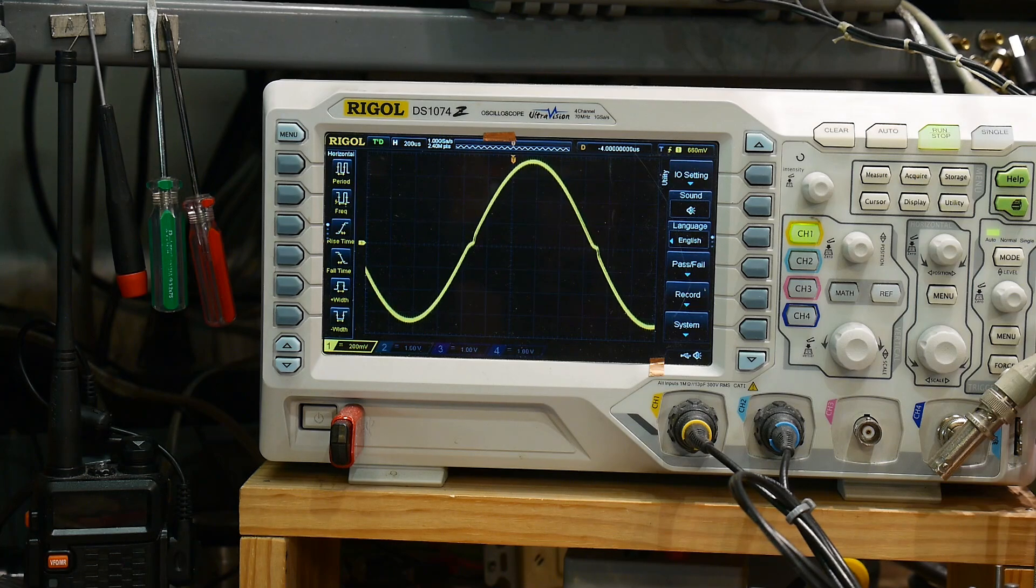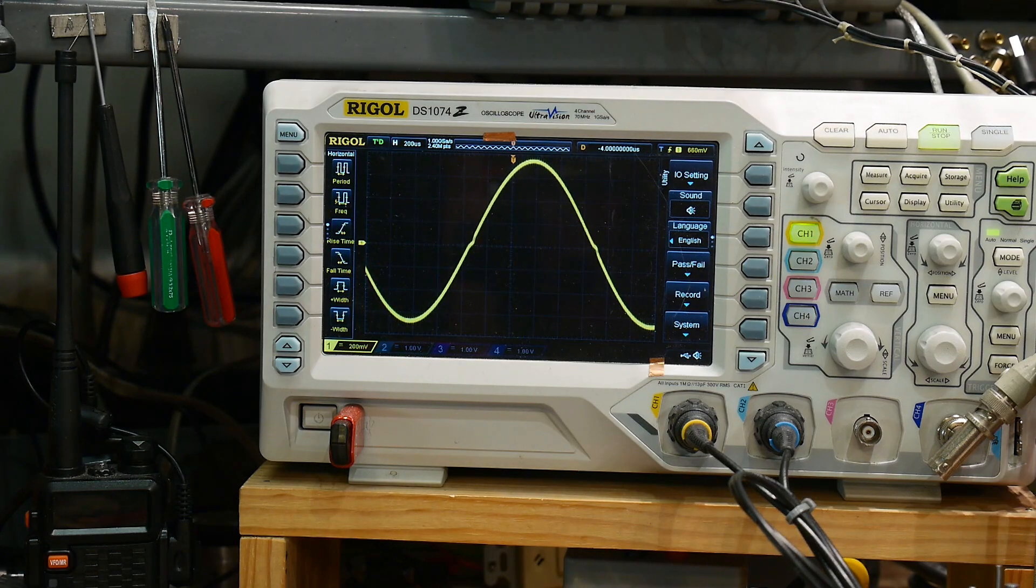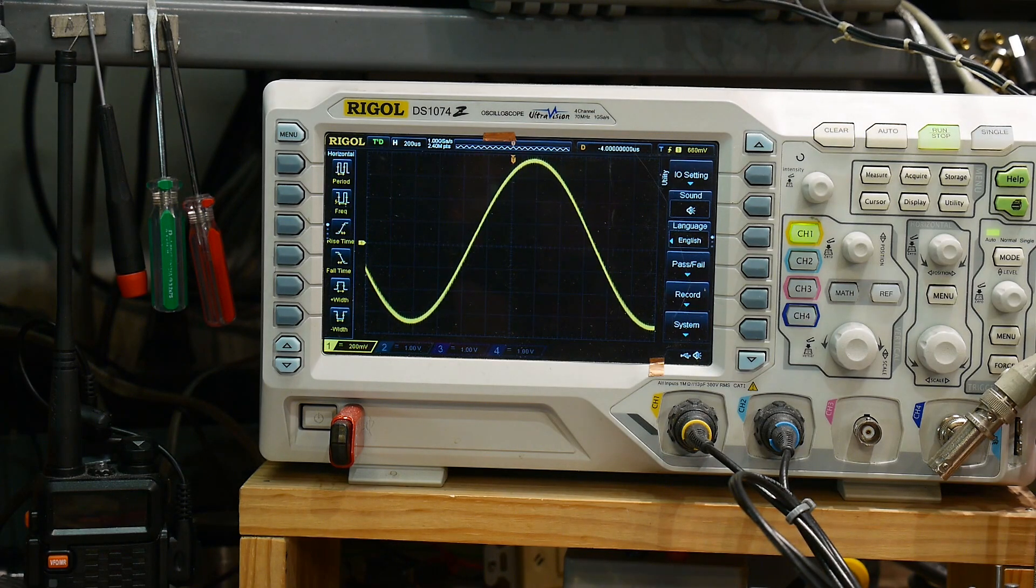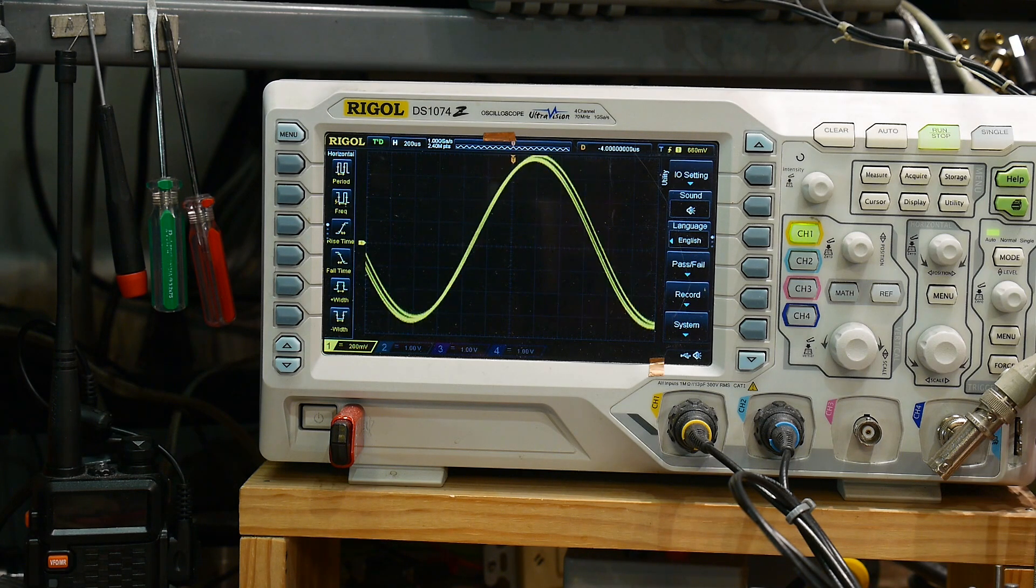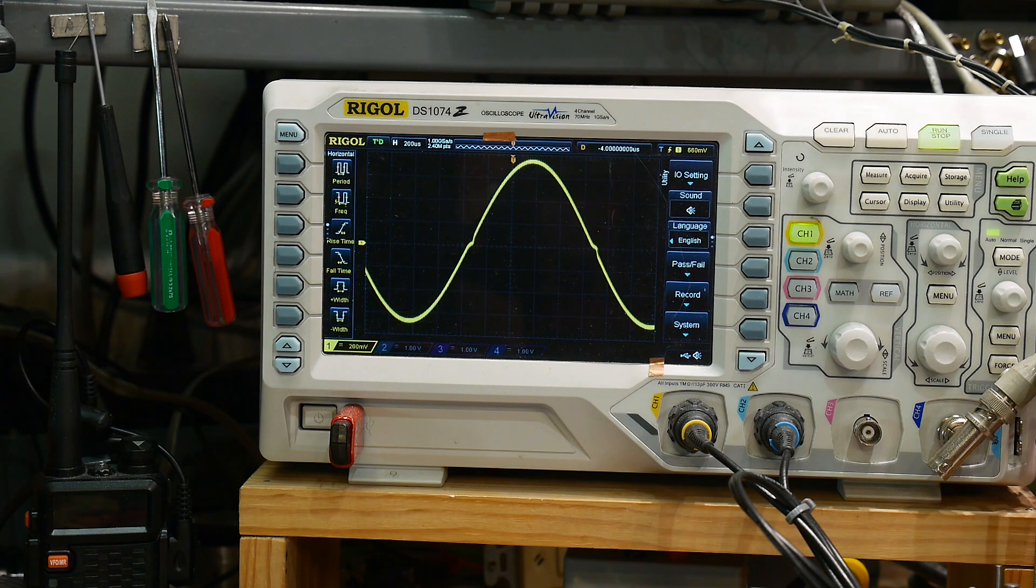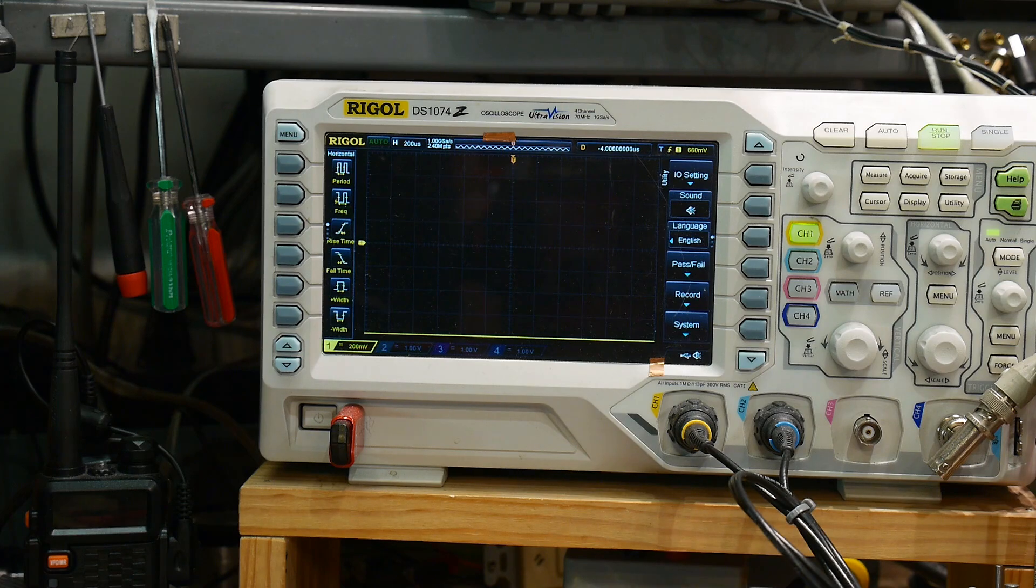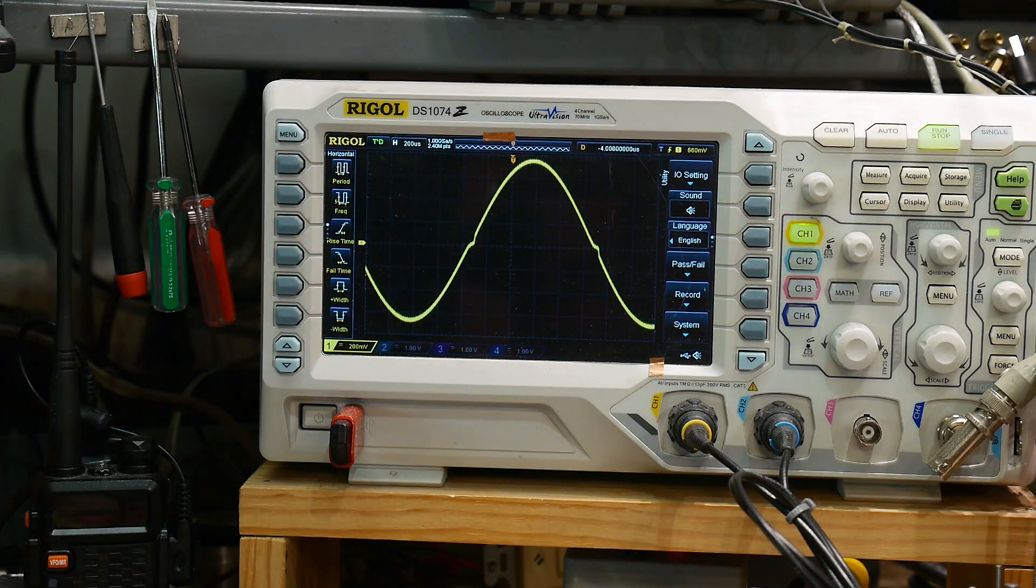Here's 22 ohms, here's 47 ohms, here's 100 ohms, 220, 220 fixed it. So here's 100, 220, here's 330. So right around 220 ohms, and we've gotten rid of that ugly crossover distortion.